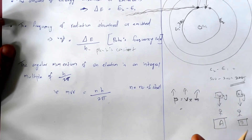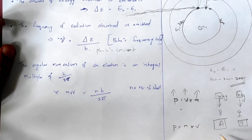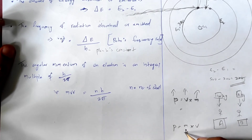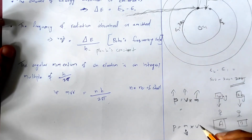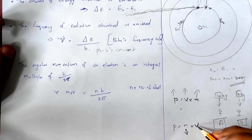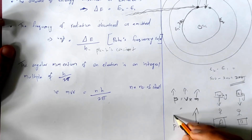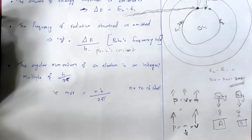For example, consider a bullet: p equals m into v. A bullet is very small in mass but has a great velocity, so it carries significant momentum.